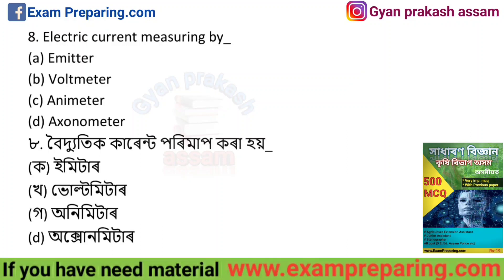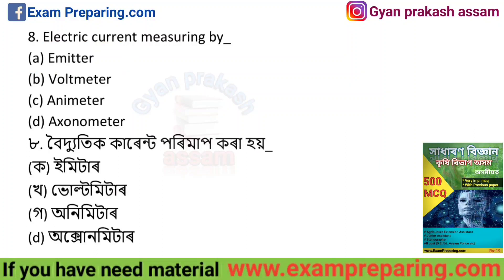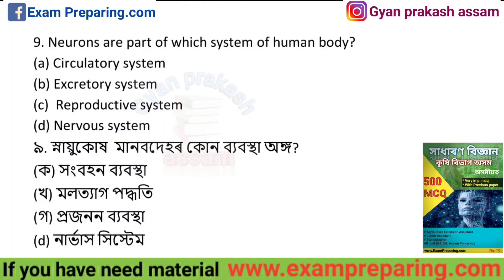What is electric current measured by? Electric current is very important. The answer is ammeter. The next question: neurons are part of which system of the human body?